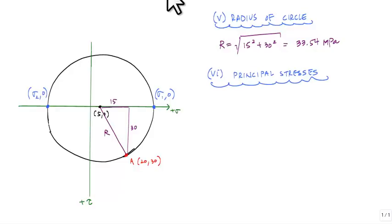Previously, we determined that this distance was called sigma average, which was equal to 5. Now we have to go an additional distance to this outer point, which is the radius r. That tells me that sigma 1 equals sigma average plus the radius, which is 5 megapascals plus 33.54, and that is 38.54 megapascals.